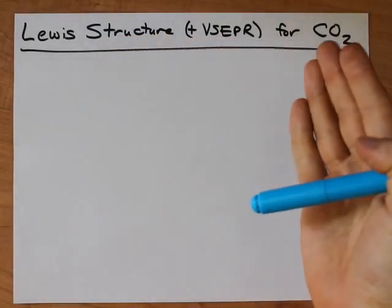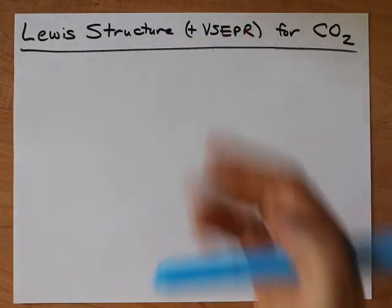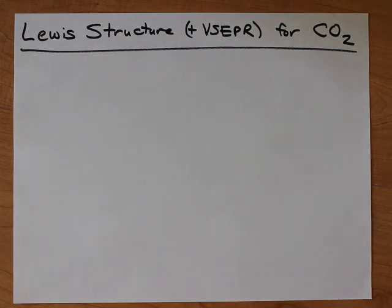Alright, let's draw the Lewis structure for carbon dioxide. We'll also talk about its VSEPR shape.